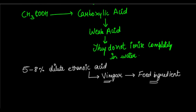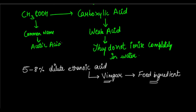The common name for ethanoic acid is acetic acid. It is very commonly called acetic acid, but its IUPAC name is ethanoic acid. So 5 to 8% dilute ethanoic acid is vinegar, a food ingredient. It is a weak acid since it is a carboxylic acid and does not ionize completely in water.